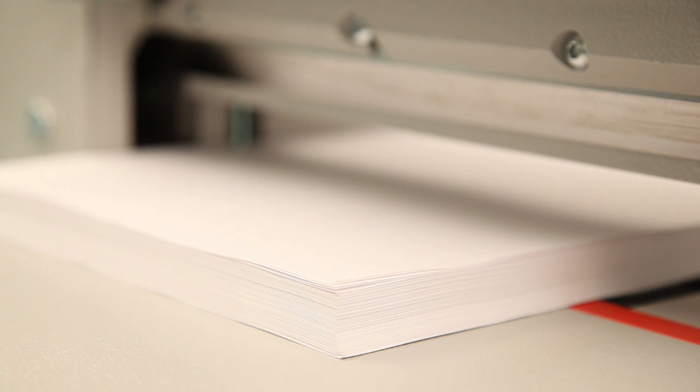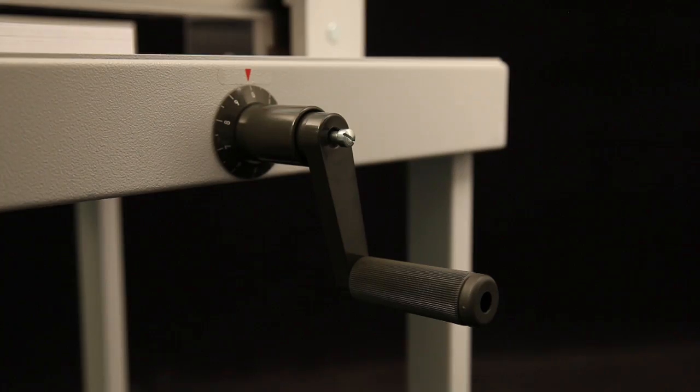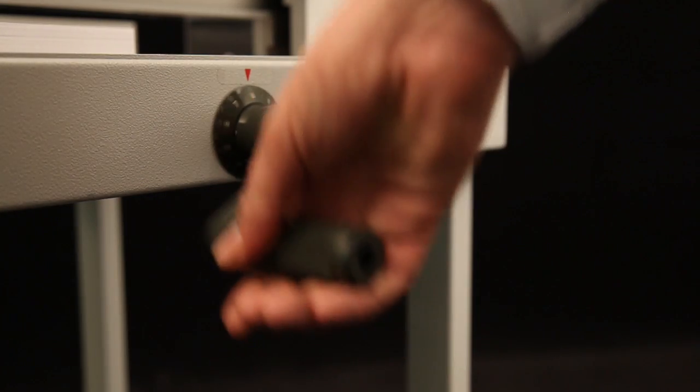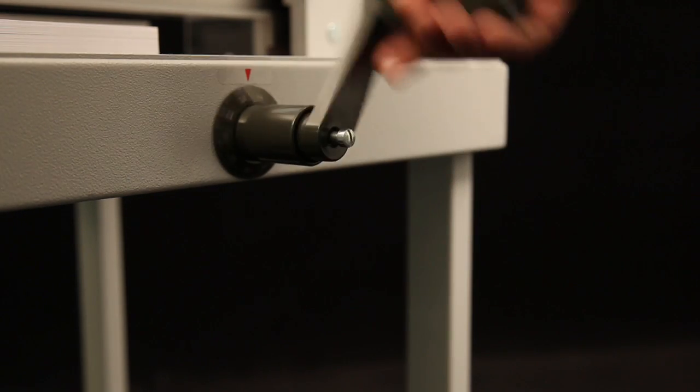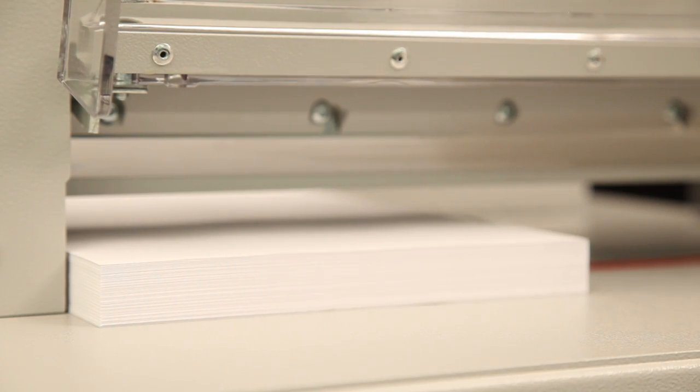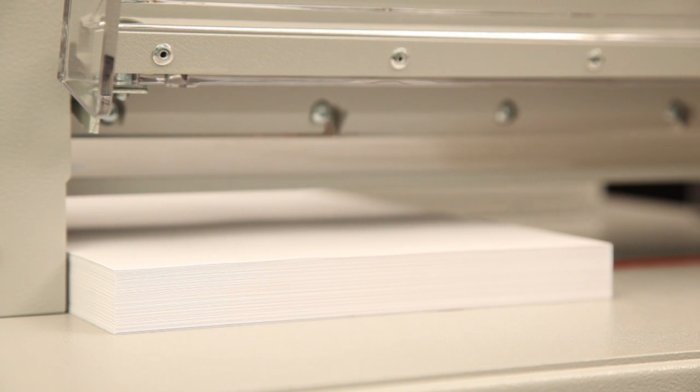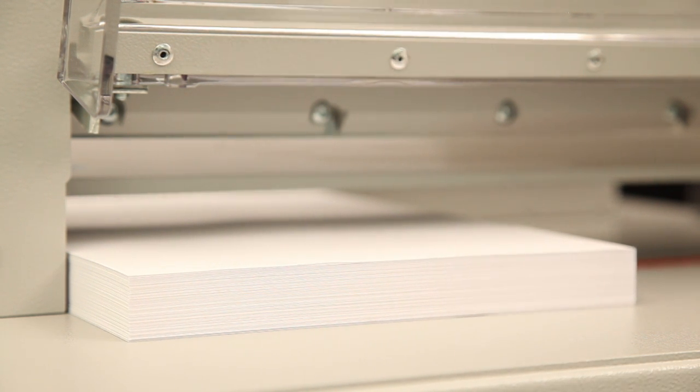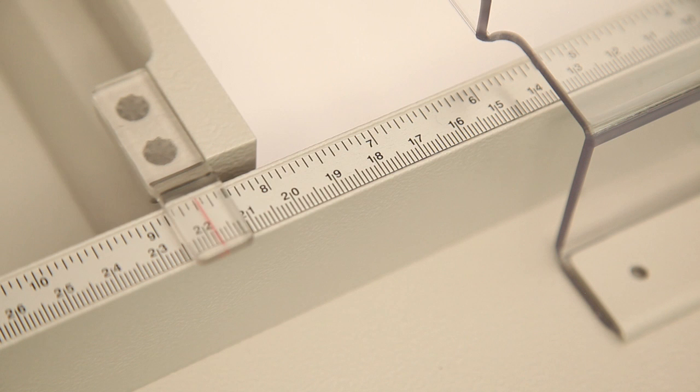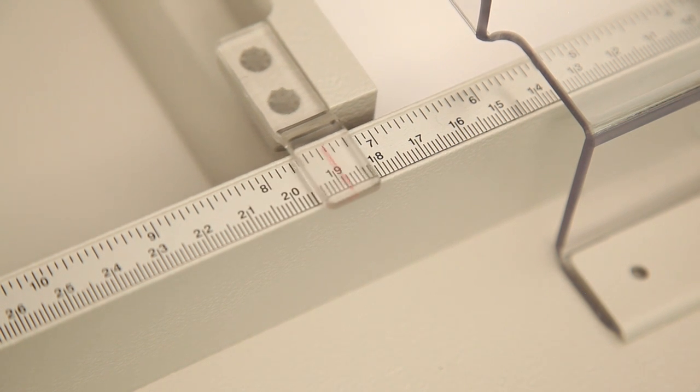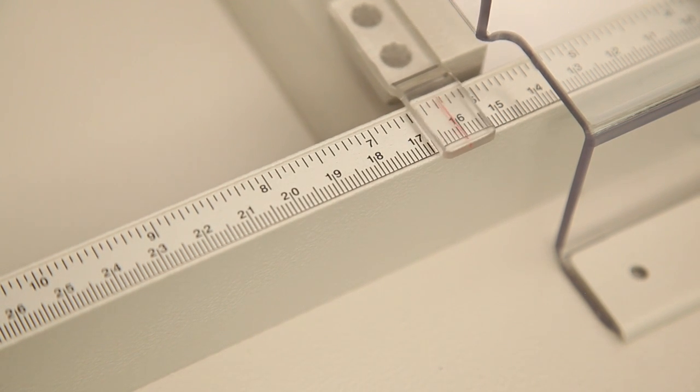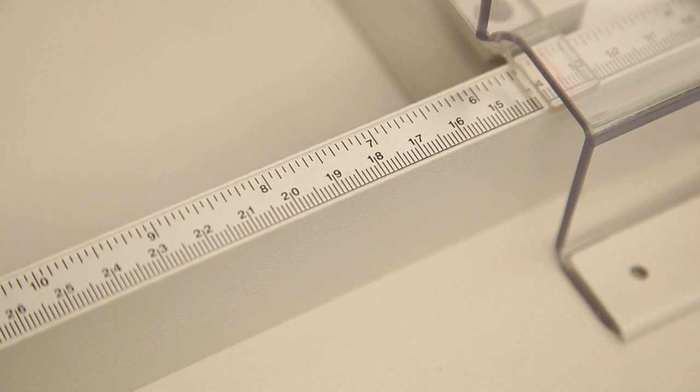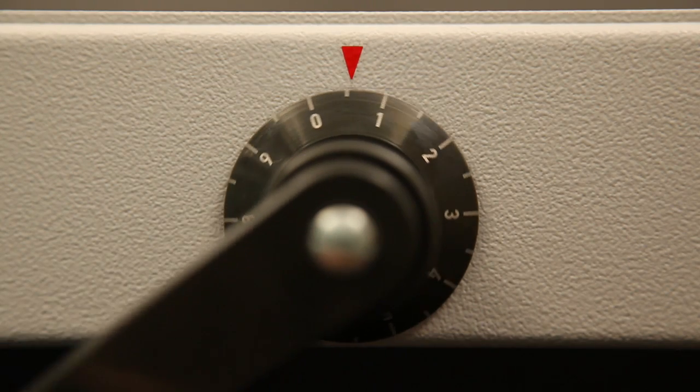The hand crank is used to adjust the spindle-guided back gauge quickly and easily to the desired cutting position. The perfect alignment of the paper stack is guaranteed by the accurate aluminum side guides and the precise measuring scale along the lateral back gauge.